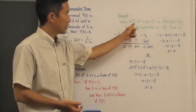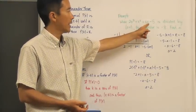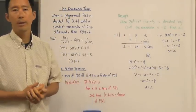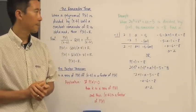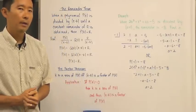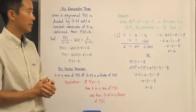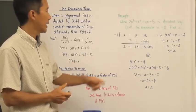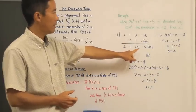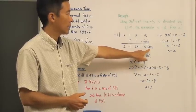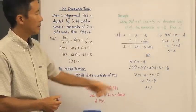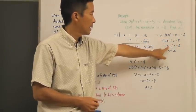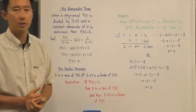Given 2x cubed plus x squared plus ax minus 5, divided by x plus 1, with a remainder of negative 8, what is the value of a? One method is synthetic division, which gives a remainder of negative 5 minus the quantity (a plus 1). Since that remainder equals negative 8, we can solve to find that a equals 2.